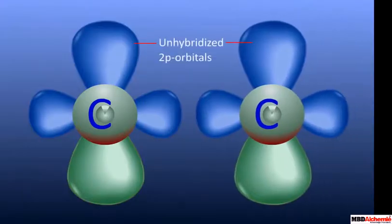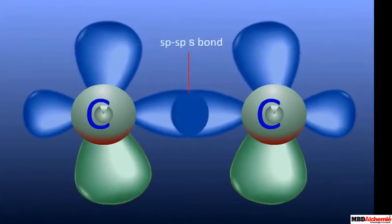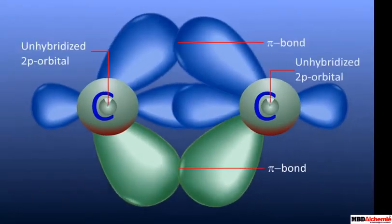Each of the two unhybridized orbitals of one carbon overlaps sidewise with the similar orbital of the other carbon atom to form two weak pi bonds.